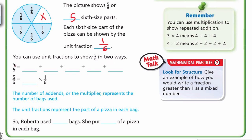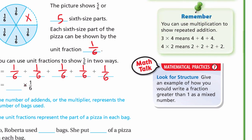The first way is to decompose 5/6. Five-sixths means five sixth-size parts, which equals 1/6 + 1/6 + 1/6 + 1/6 + 1/6.